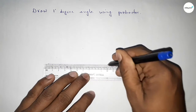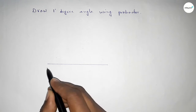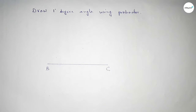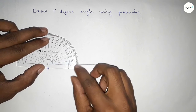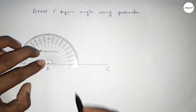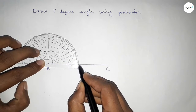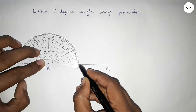First of all, we have to draw a line of any length, taking point B and point C. Now putting the protractor on point B and counting one degree — this is zero, and this is one — so this is one degree.